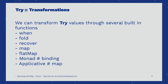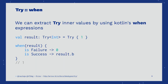TRY comes with a lot of combinators and methods that allow us to compute and transform the internal values assuming the computation succeeded. We can use Kotlin when expressions to contemplate all cases in which a TRY may find itself, whether it's a failure or a success.